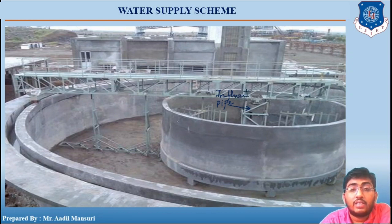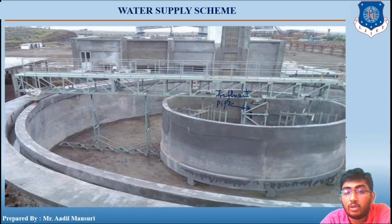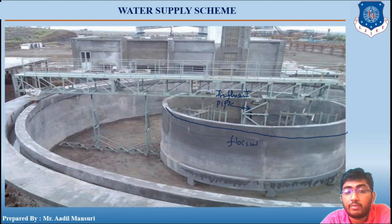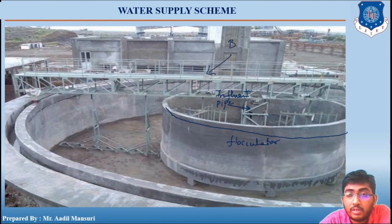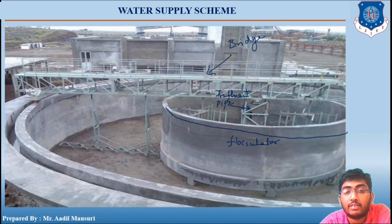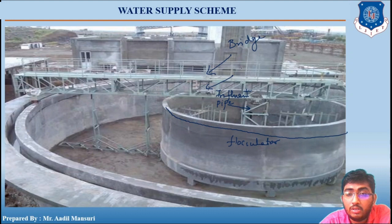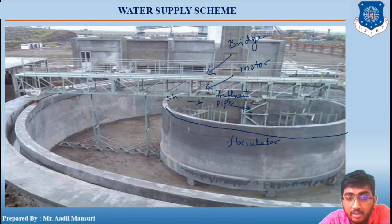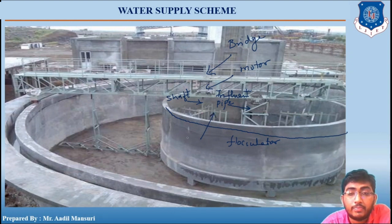Next is the flocculator tank. The cylindrical tank you can see here is the flocculator tank. There is a bridge on which persons can move for inspection. There is also a motor connected with a shaft, and the shaft is connected with paddles. Whatever water comes out of the flash mixture is a mixture of water and coagulant.